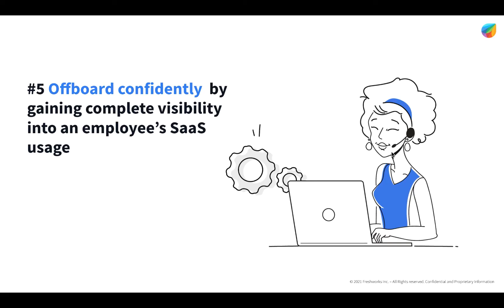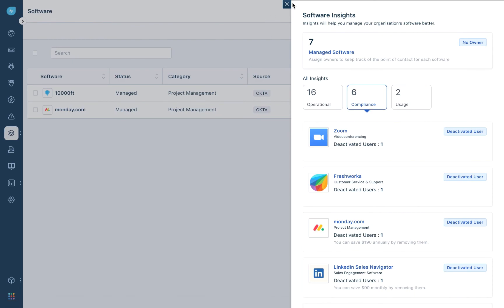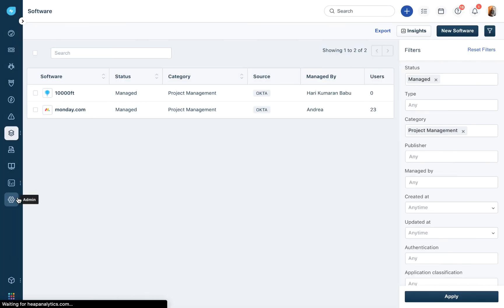Moving to the final step, step five: offboard confidently. Now that you have complete visibility into all the SaaS applications used in your organization, you can also ensure that you offboard employees correctly by revoking all the accesses they have to SaaS applications. To do this, there are two things to stay on top of. One is the compliance insights — here you can see all deactivated users assigned to SaaS applications and ensure they are deprovisioned when employees leave. Or, you can go to the admin tab.